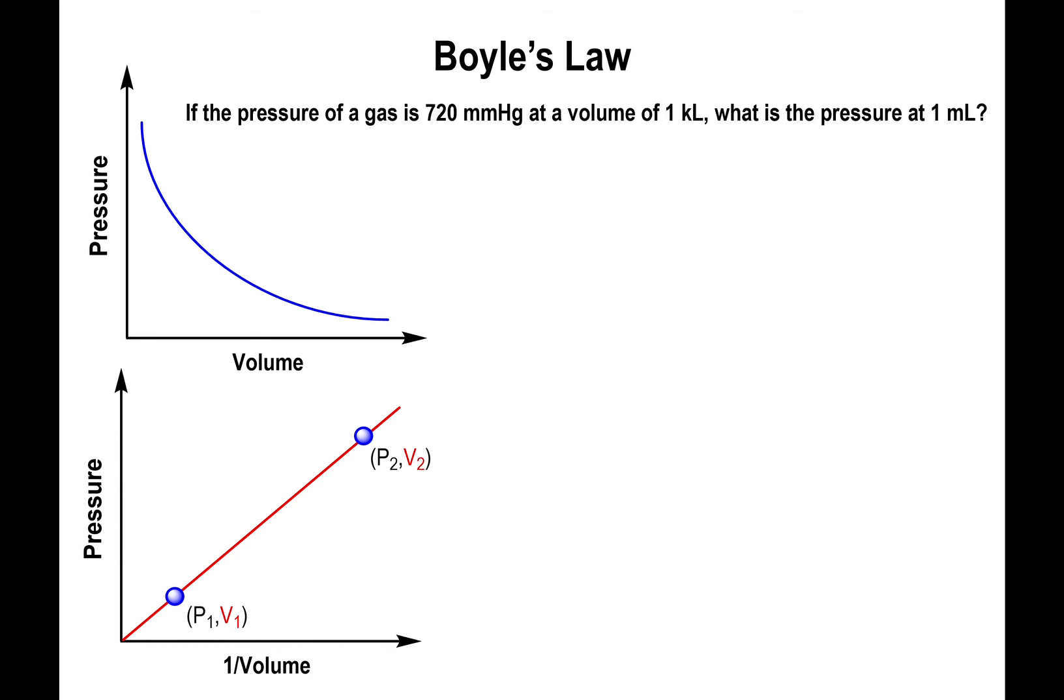Let me show you an example. If the pressure of a gas is 720 millimeters mercury at a volume of one kiloliter, what will be the pressure at the new volume? We have two sets of pressure mentioned and two sets of volume, so this spells out Boyle's Law.